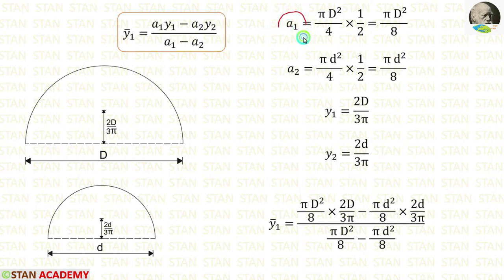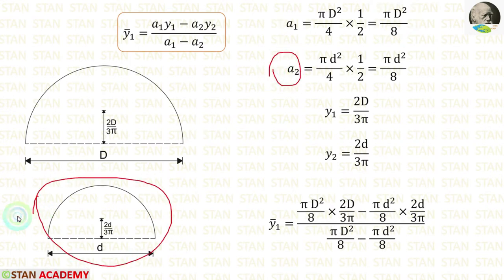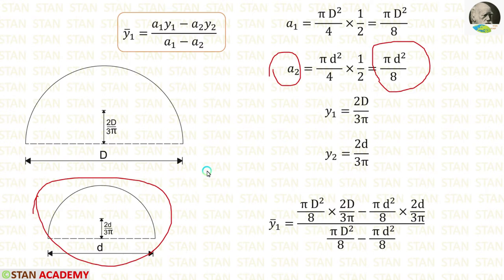Finally, we are getting a1 is equal to pi D square by 8. In the same way, we can calculate the area for the inner half circle. Here we are getting a2 equal to pi small d square by 8.